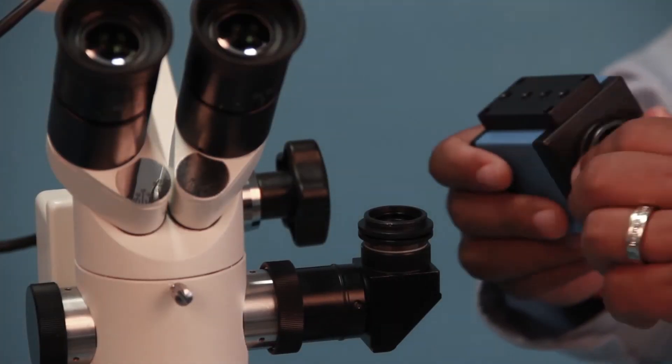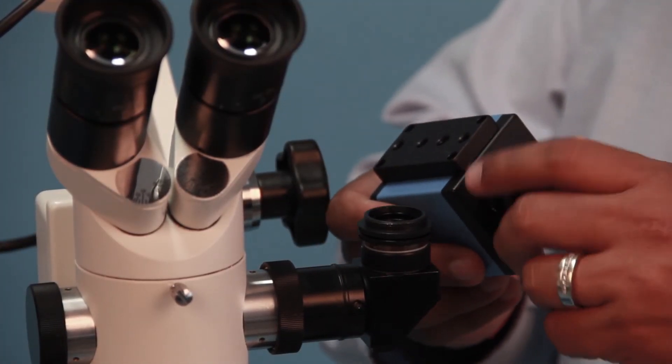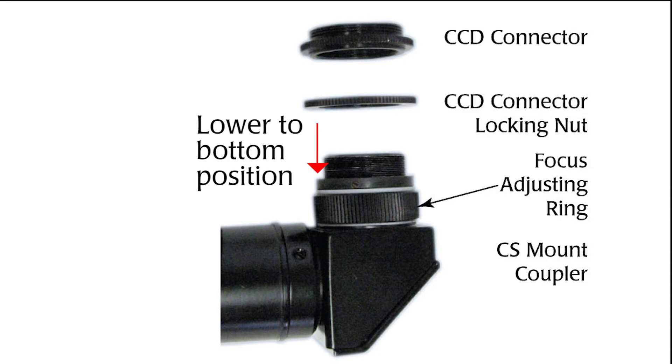Remove the camera lens cover and the 5mm extension ring from the camera. Lower the CCD connector locking nut into the lowest position on the CS mount.